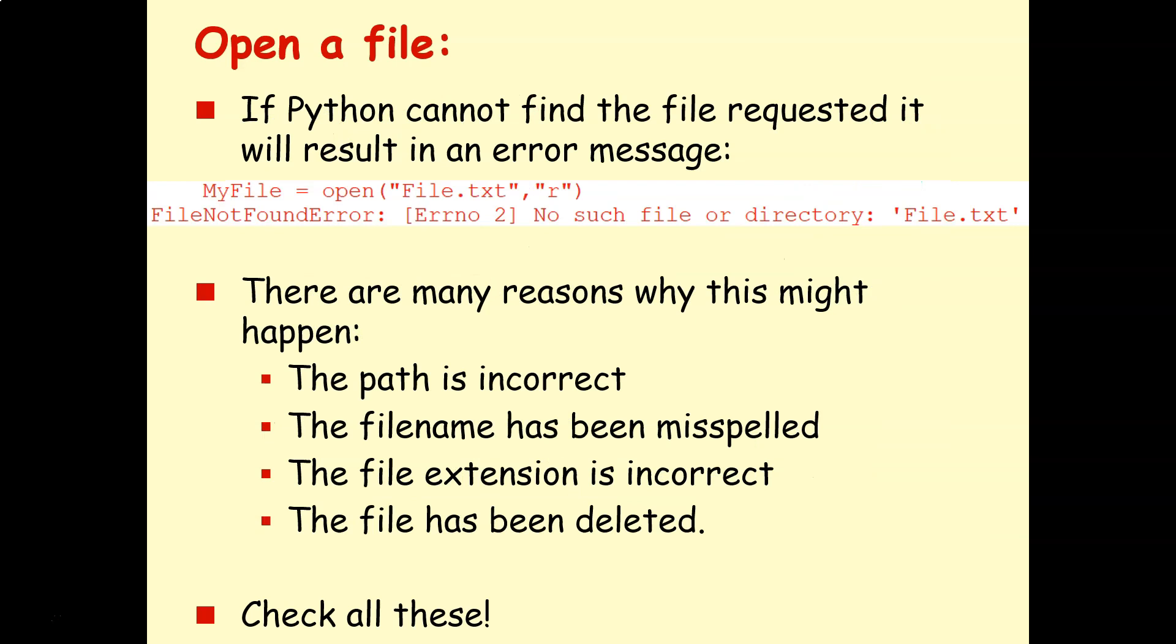If Python cannot find the file requested, it'll give you an error message that looks something like this. If that happens, then either the path is incorrect, or the file name has been misspelt, or the file extension is incorrect, or the file has been deleted or moved. So please check all these before you start panicking about your code, because nine times out of ten when a student asks me for a problem with their text file programs, it's usually one of these.